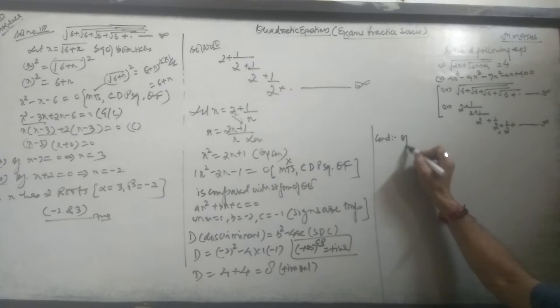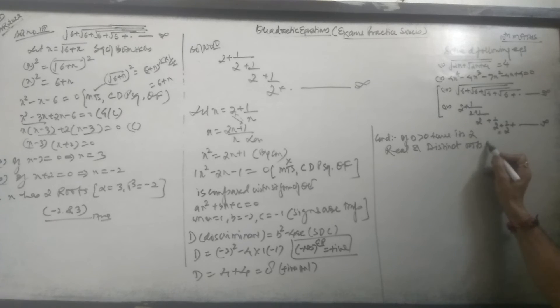Now we write the condition: If D ≥ 0, we have 2 real and unequal roots - distinct roots. One is alpha, another is beta. Applying Sridharacharya formula.